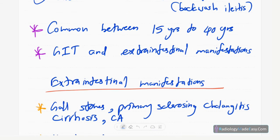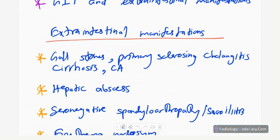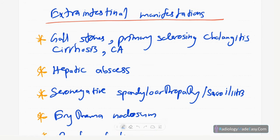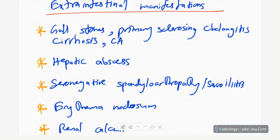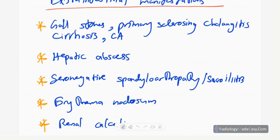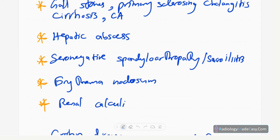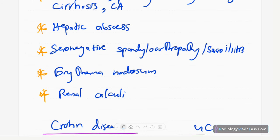There are extra-intestinal manifestations. The common ones include gallstone formation, primary sclerosing cholangitis, cirrhosis, cholangiocarcinoma, hepatocellular carcinoma, and hepatic abscess formation. There's also musculoskeletal system involvement — seronegative spondyloarthropathies and sacroiliitis, so the axial skeleton can get involved. Skin manifestations such as erythema nodosum can also occur, and another one is renal calculi.